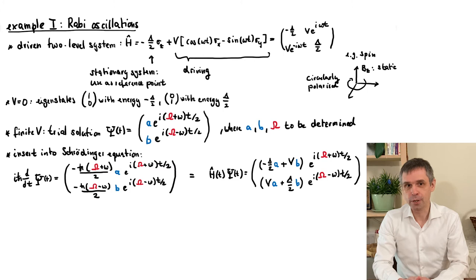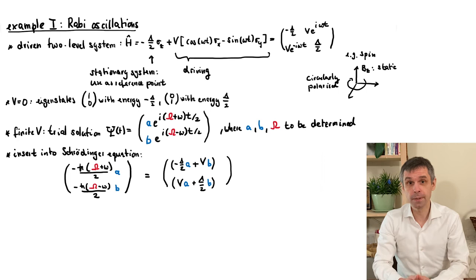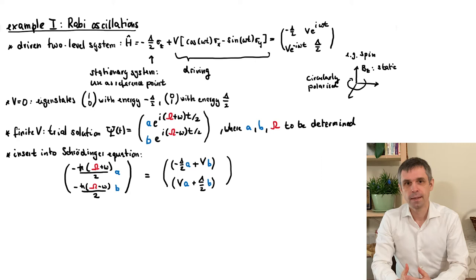And when we then set both expressions equal to each other, as demanded by the Schrödinger equation, each component gives us a condition, and in these conditions, the exponential factors can simply be cancelled. What we have here can be interpreted as a homogeneous system of linear equations for the parameters a and b, where some coefficients also depend on capital Omega.